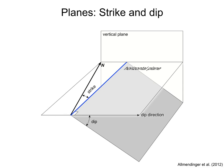This angle is measured as an azimuth from 0 to 360 degrees: 0 is north, 90 is east, 180 is south, 270 is west, and 360 is north again. Dip is the angle that the plane makes with the horizontal, measured on a vertical plane perpendicular to strike and parallel to the dip direction.